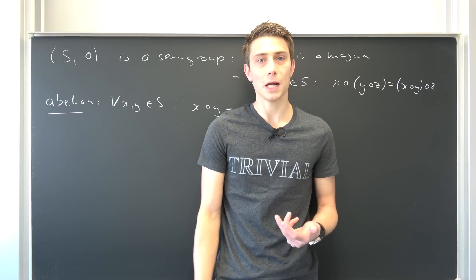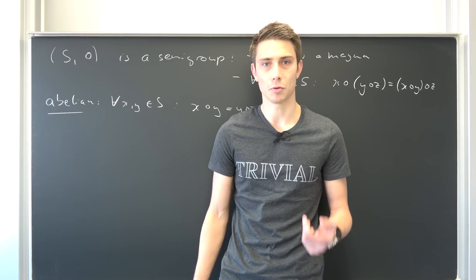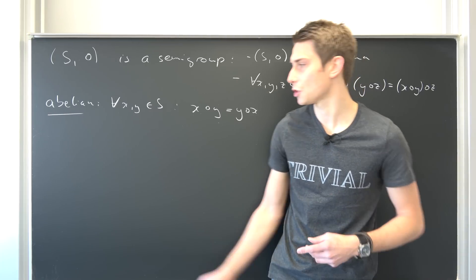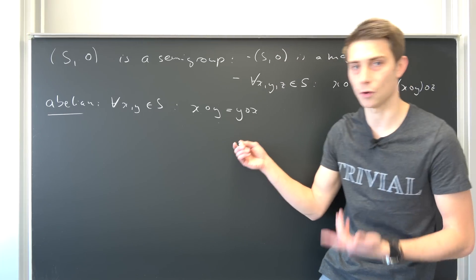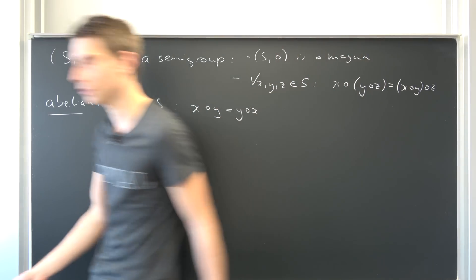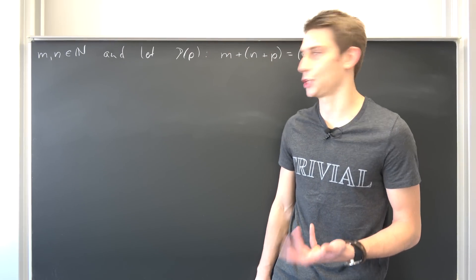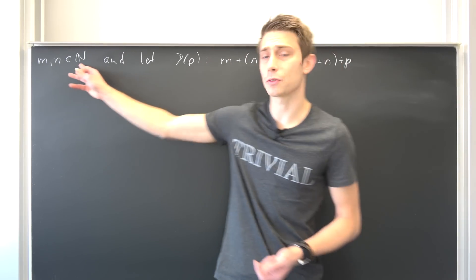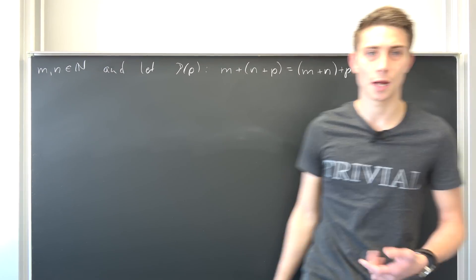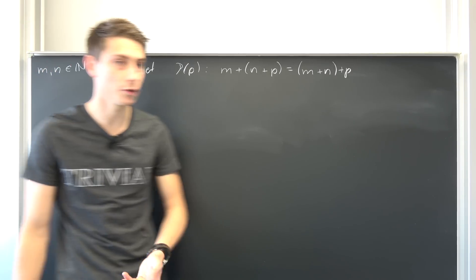Most of the time people are going to refer to abelian as just commutative, so you can also refer to this as a commutative semigroup. With this out of the way, we are going to prove today that the natural numbers under addition form an abelian semigroup. We have already shown that the natural numbers under addition form a magma, so all that's left to show is that associativity and commutativity hold for all natural numbers. We're going to do this now.